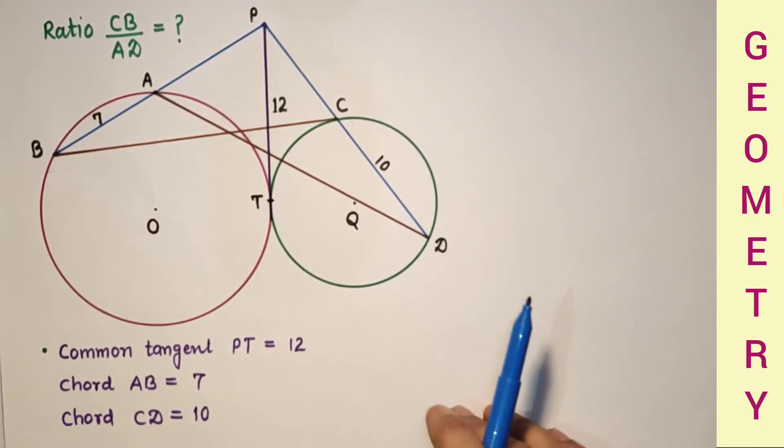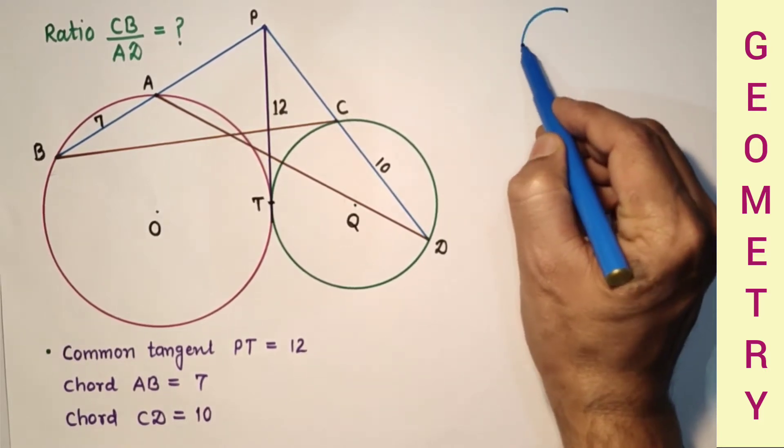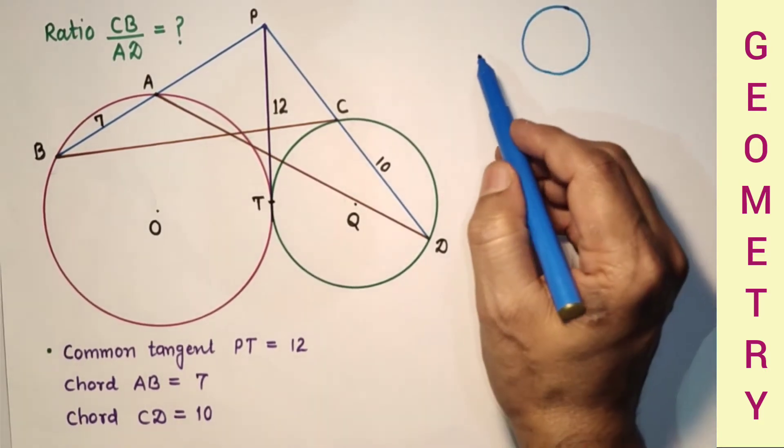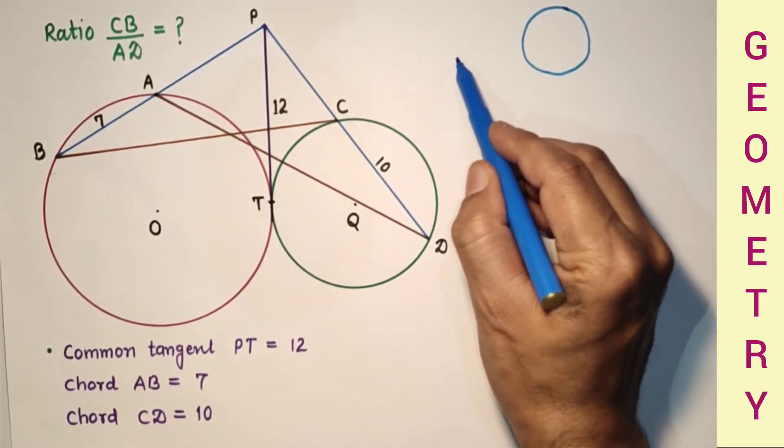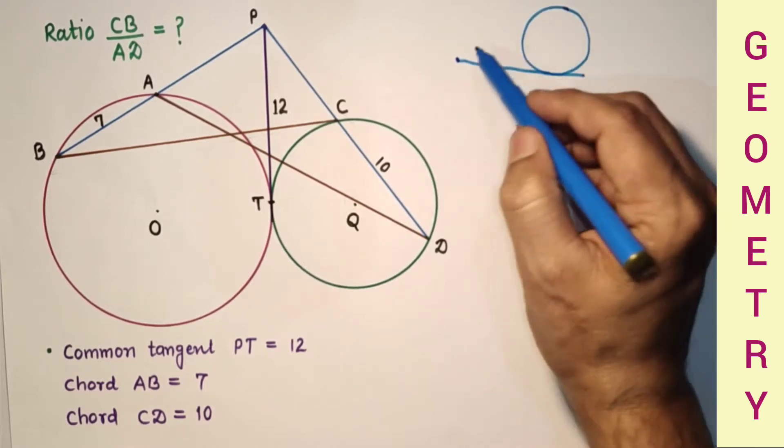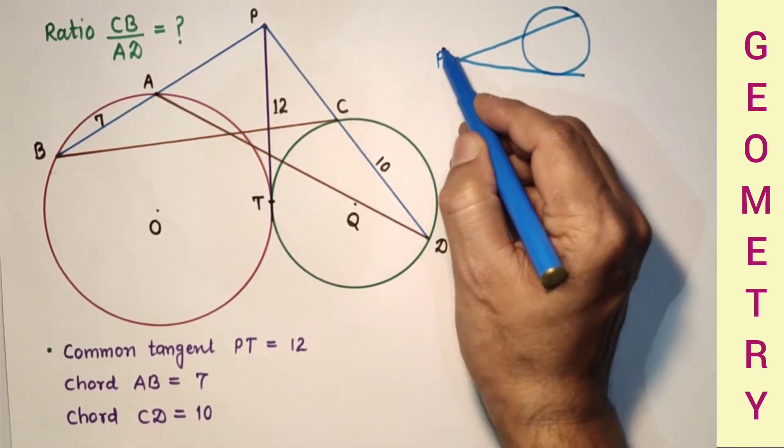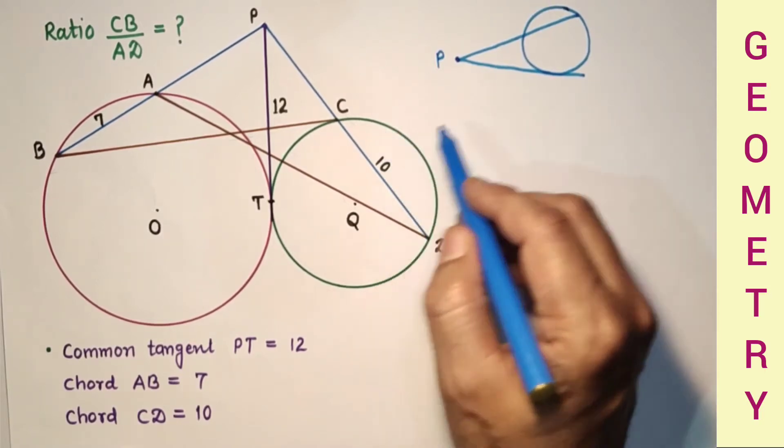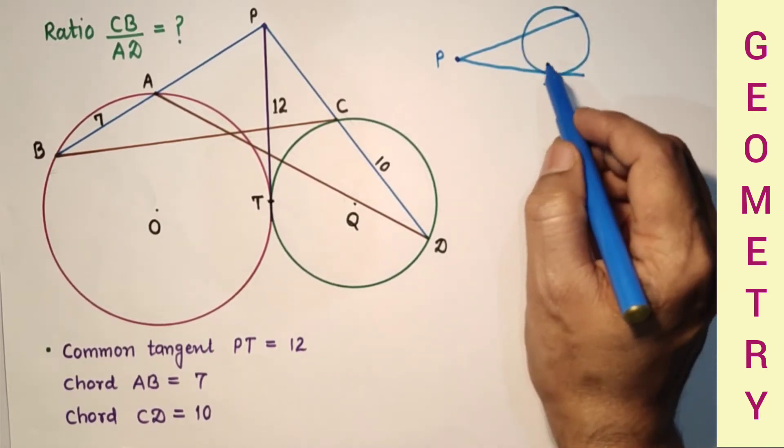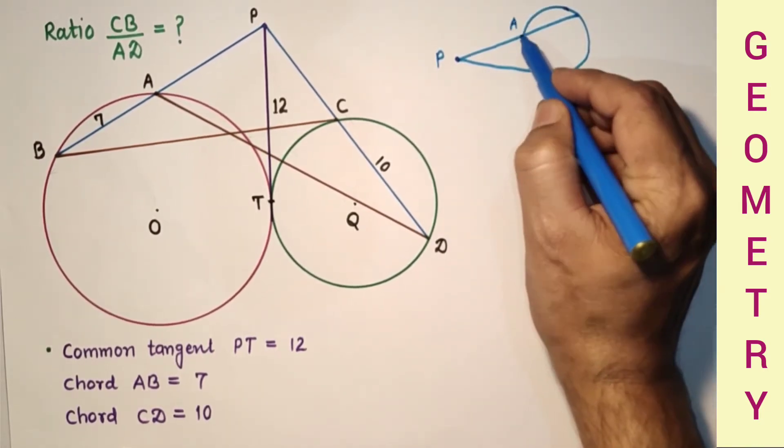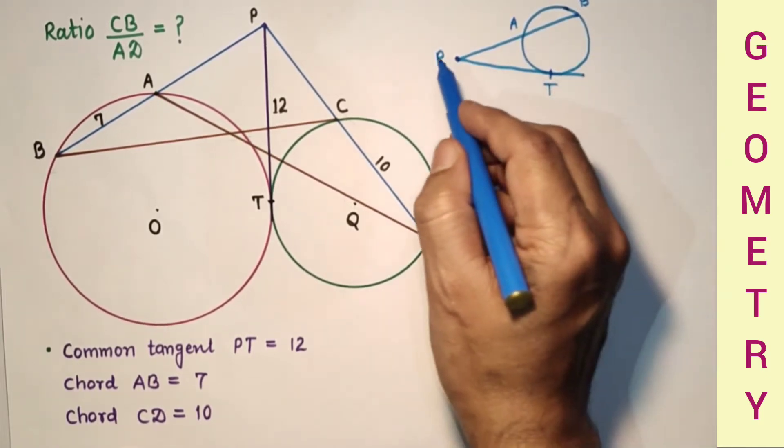In tangent secant theorem, if a circle is given and from any exterior point, if this is tangent drawn and this is secant, and this is T, this tangent touches the circle at point T, and let this point is A, this point is B. So PB is secant and PT is tangent.